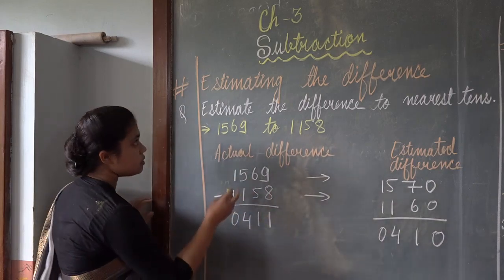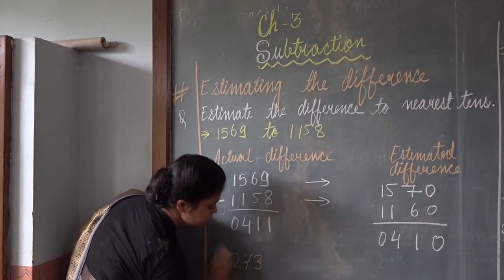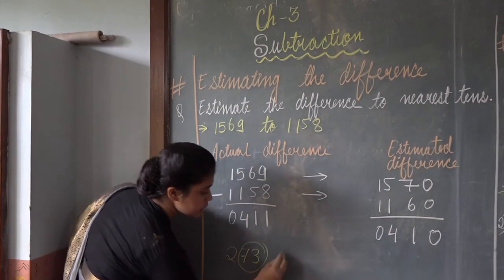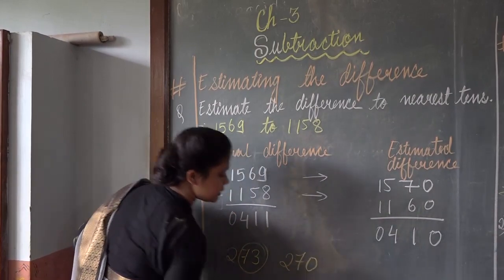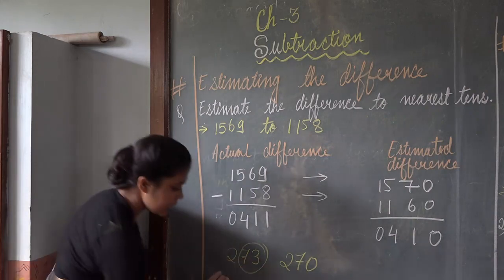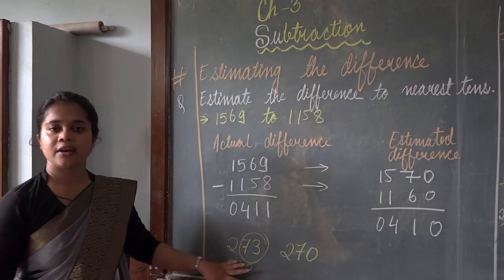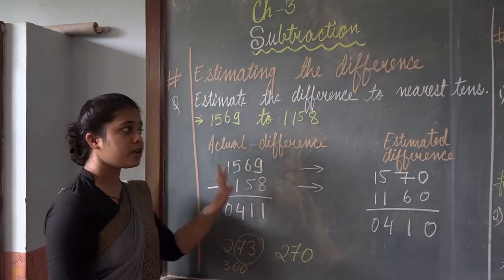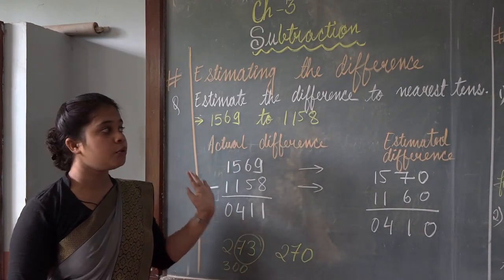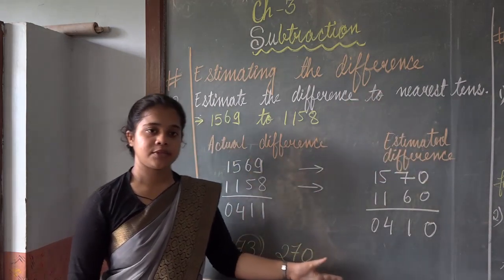If I give you a number as 273 and estimate it to nearest tens, it will be 270, but if I estimate it to nearest hundreds, it will be 300. So be careful while estimating a number — read the question properly whether they are asking you to estimate to nearest tens, hundreds, or thousands.